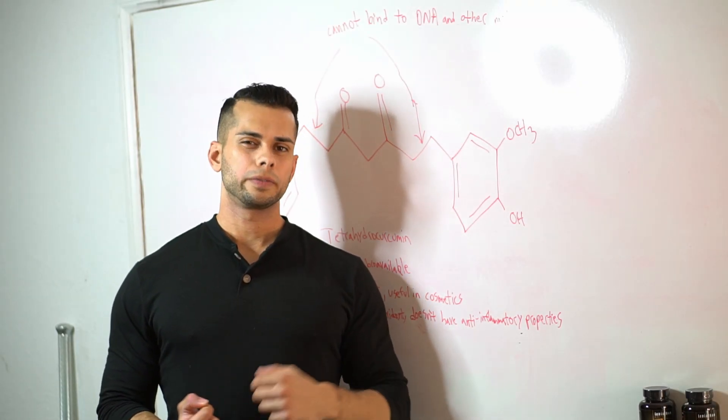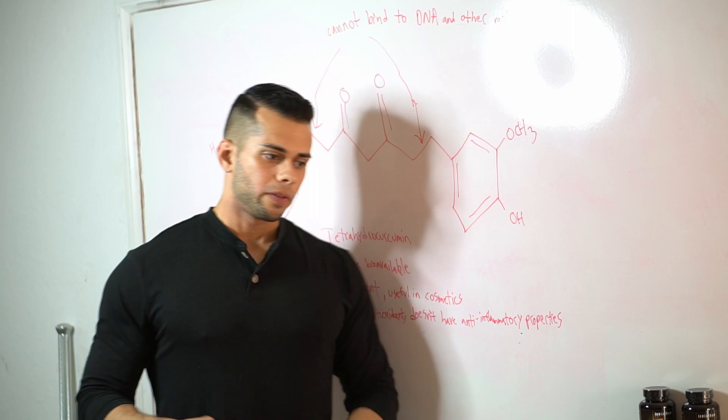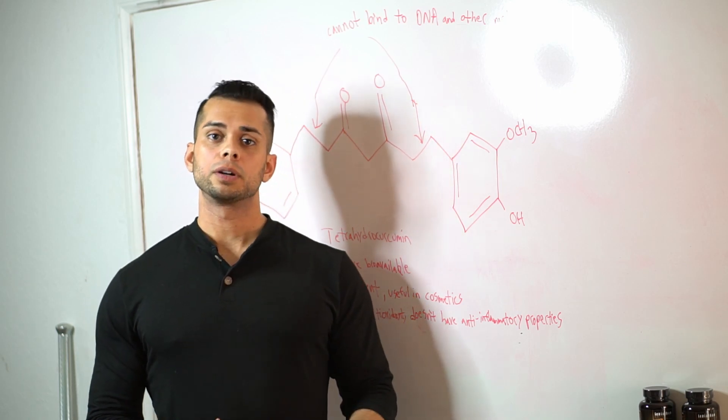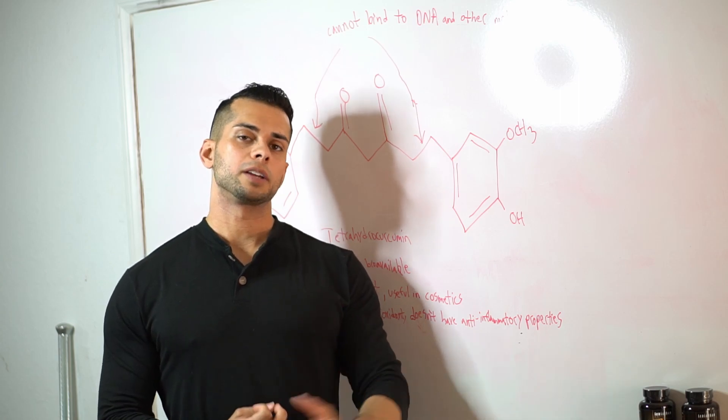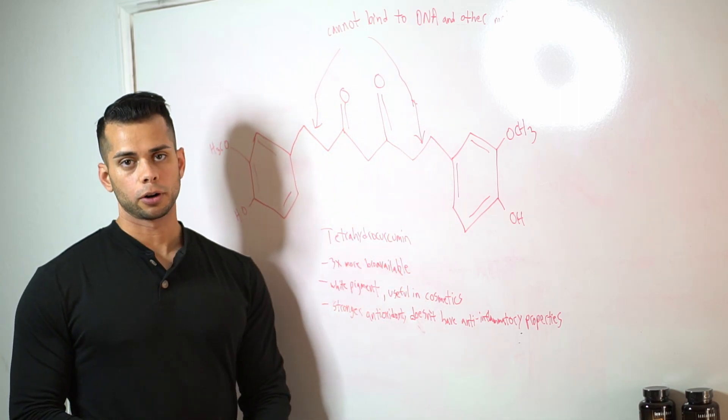I want to talk a little bit about one of the metabolites of curcumin that is a result of the phase one metabolism when curcumin gets metabolized by the liver and that is tetrahydrocurcumin.